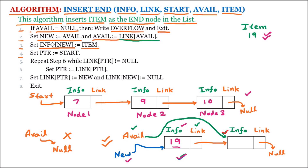Line number 4: set ptr equal to start. So ptr is a pointer that is having the value of start, meaning it is having the address of node number 1. Line number 5 says repeat step 6 while link of ptr is not equal to null. So we are checking that ptr is on node number 1 and the link portion is having the address of the next node, which is not null. So the condition is true.